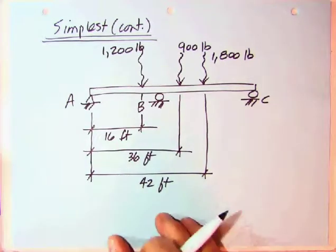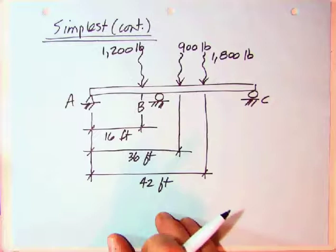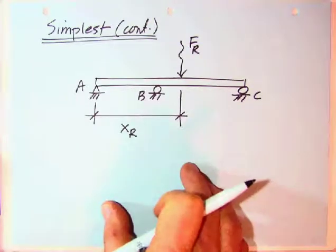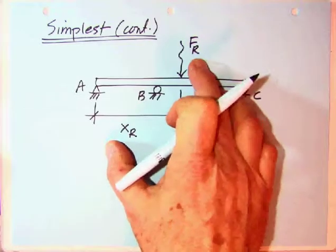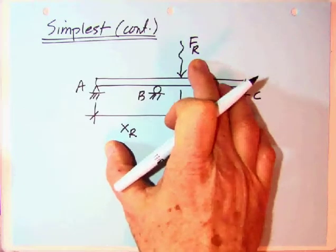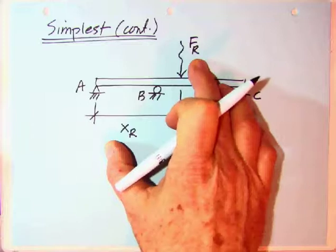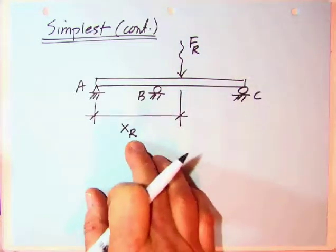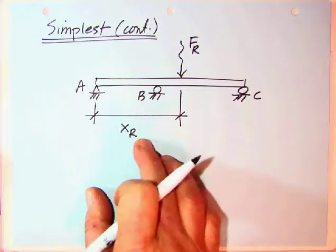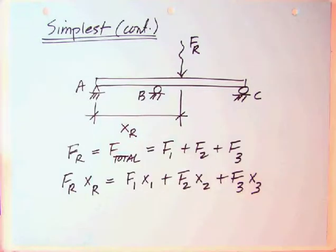So what is this thing about simplest resultants about anyway? What it's about is coming up with a single load or single force, which is called the resultant, that's why it's simplest resultants, F sub capital R, located at some distance X sub R. And how do we define those?